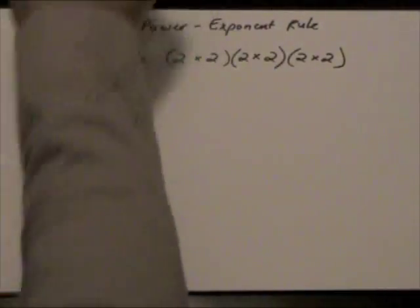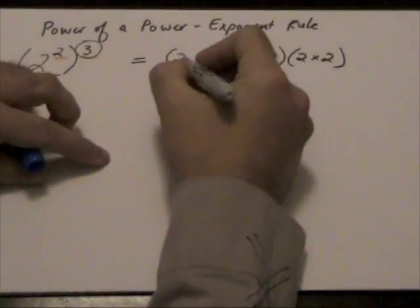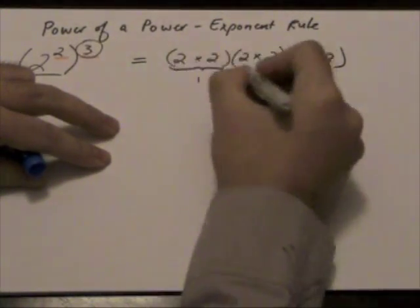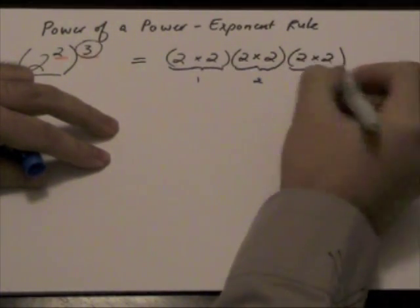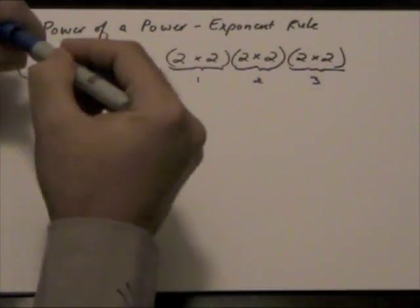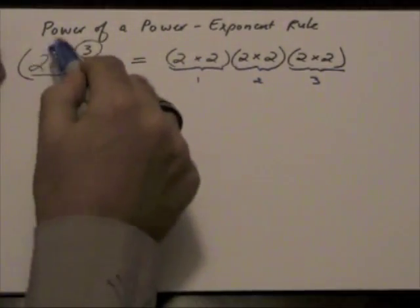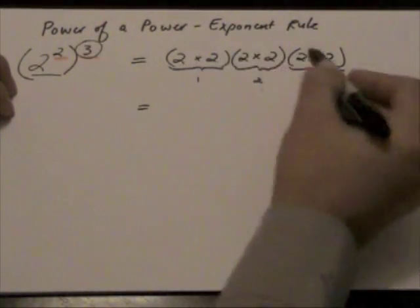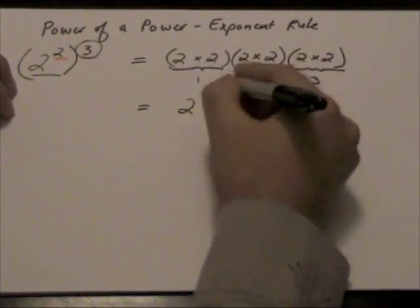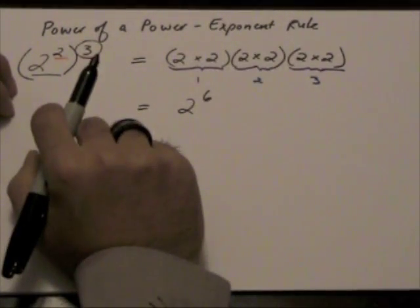So notice here, with these, here's 1 time, here's 2 times, here's the 3rd time. And what we have here within the brackets is we have 2 to the power of 2. Now, in other words, if we were to simplify that, 2 is being multiplied by itself a total of 6 times.